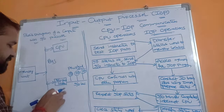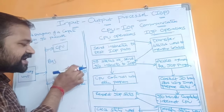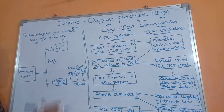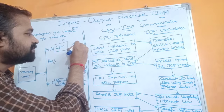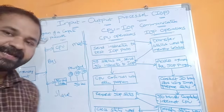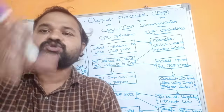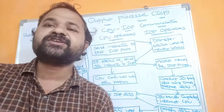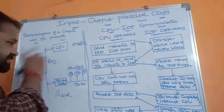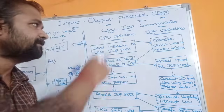With the help of the I/O processor, we can transfer the data between memory and peripheral devices — that is the major advantage of the I/O processor. Here, the CPU is the master whereas the I/O processor is the slave. If there is any I/O operation, the CPU assigns the task to the I/O processor, and then it is the duty of the I/O processor to transfer the data between I/O devices and the memory.